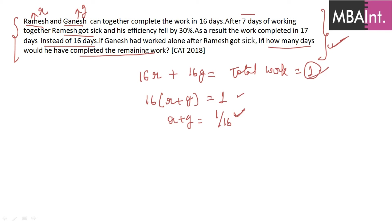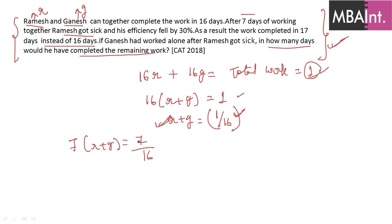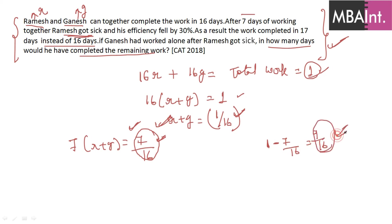They work together for 7 days, completing 7/16 of the work. After Ramesh falls sick, his efficiency is reduced by 30%. Remaining work = 1 − 7/16 = 9/16. Without the efficiency reduction, they would have completed this remaining work in 9 more days (totaling 16 days). But with the reduction, they take 10 more days.